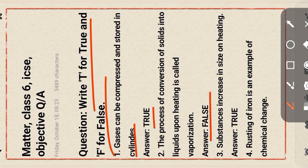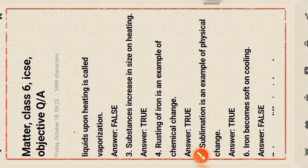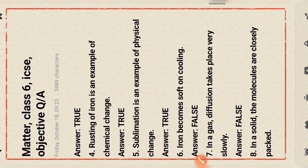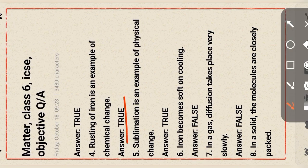Substances increase in size on heating — true. Rusting of iron is an example of chemical change — true. Sublimation is an example of physical change — true. Iron becomes soft on cooling — false.